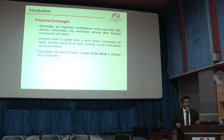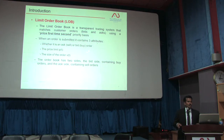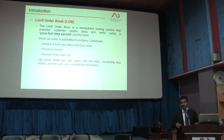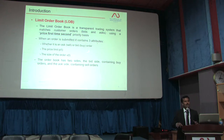Let me explain the Limit Order Book in detail. LOB — in IT people say 'large objects,' but in finance, LOB means Limit Order Book. The Limit Order Book is a transparent trading system that matches customers' orders, bids, and asks using a price-first, time-second priority basis. If you invest your money in the stock market, the market value goes up and down. The LOB has mainly three attributes: whether it is an ask, bid, or buy; second is the price limit; and third is the time.